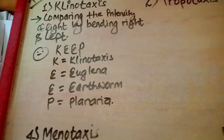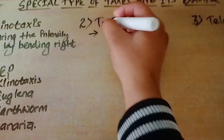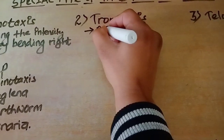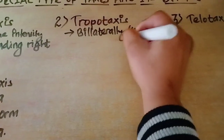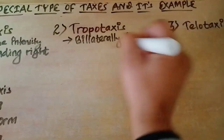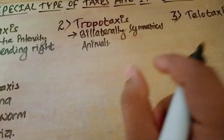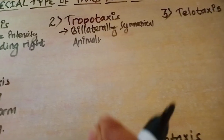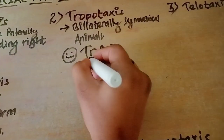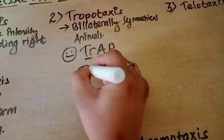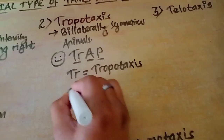Now we have tropotaxis. In tropotaxis, the main point to remember is that it is shown by bilaterally symmetrical animals. If you see 'bilaterally symmetrical animal' in a definition, always go to tropotaxis. For the example, we have the trick T-R-A-P: T-R stands for tropotaxis, A means Argulus, and P means planaria.